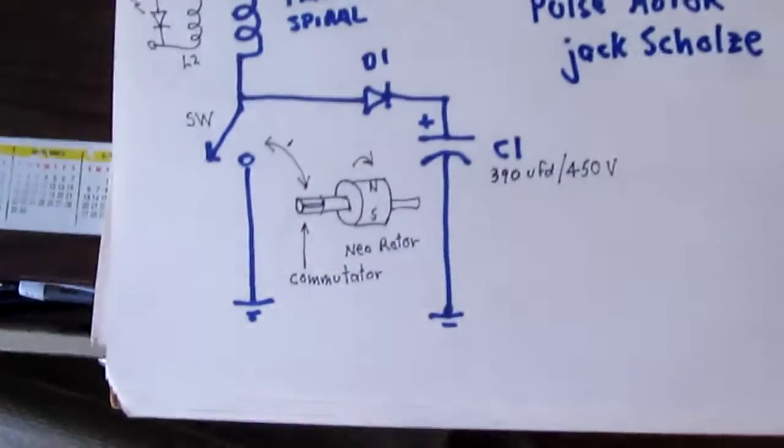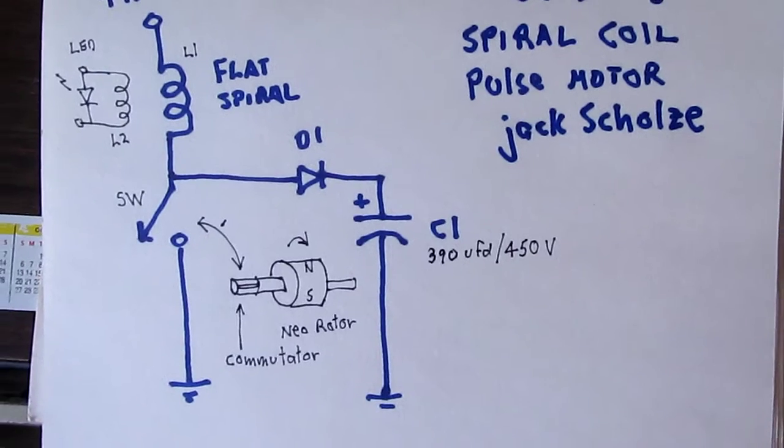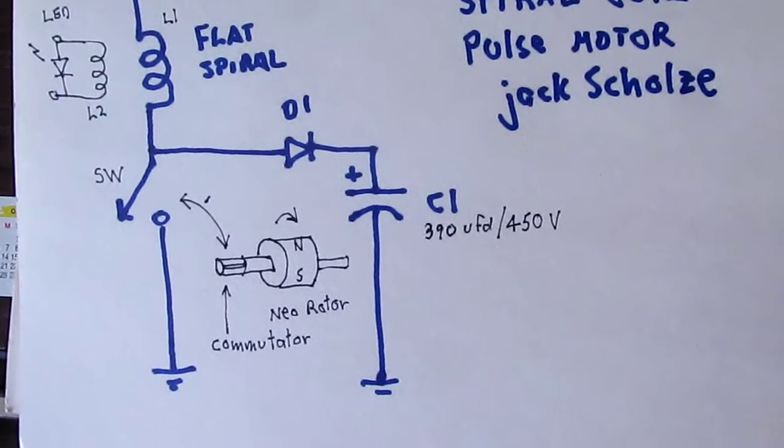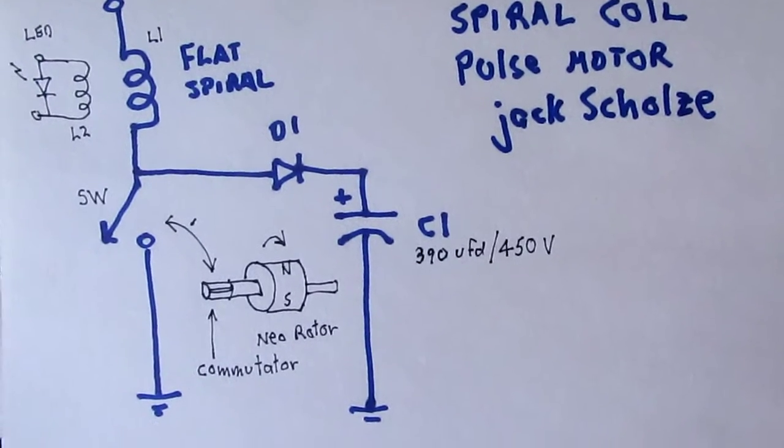It's a simple circuit with a flat spiral coil and a Newman motor type of commutator so that it just makes and breaks to produce the magnetic field.